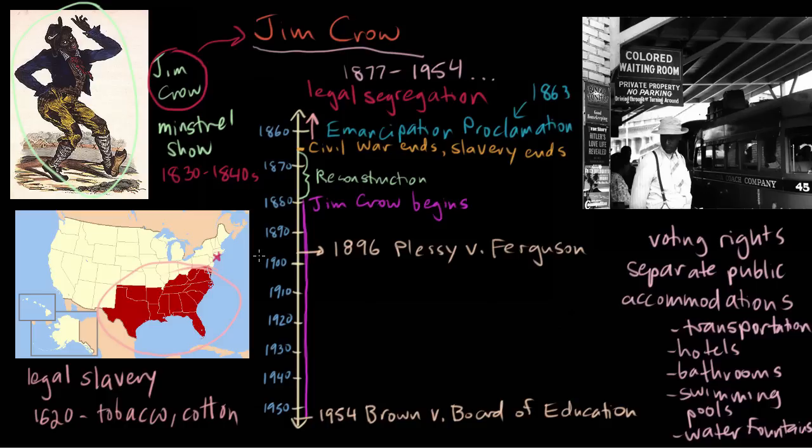So in the immediate period after the Civil War, the question was: what are race relations going to look like in the South? How will whites and blacks relate to each other without the system of slavery, which had dominated the entire region for more than 200 years? We'll get into that in our next video.